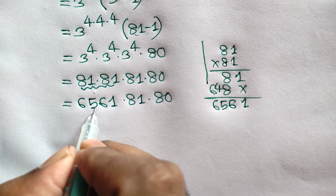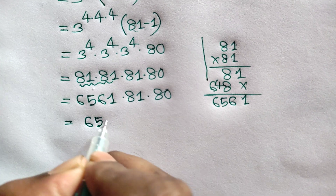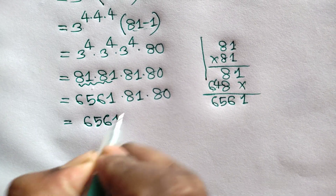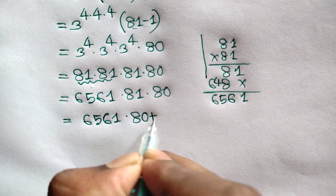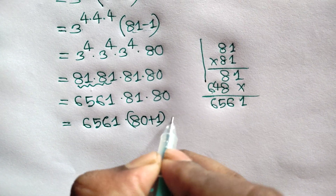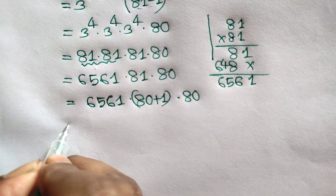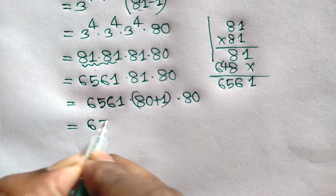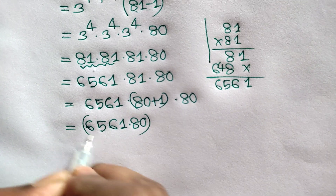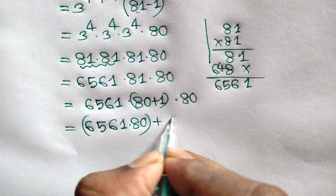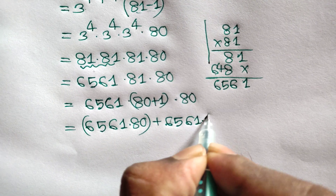Now we can write 6561 times 81 times 80. We can rewrite 6561 times 80 plus 6561 times 1.